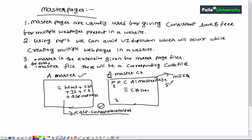The next important point is the difference between user controls and master pages. When explaining user controls, I said that using user controls we can avoid UI duplication as well as functionality duplication occurring while creating multiple web pages — which is essentially the same thing said about master pages in point two.